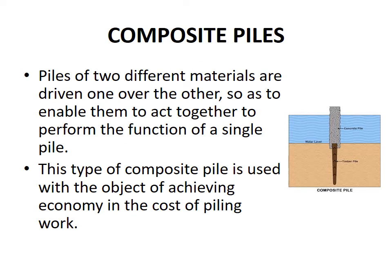Composite piles — piles of two different materials are driven one over the other so as to enable them to act together to perform the function of a single pile. As you can see from the figure, this composite pile has a concrete portion at the top and a timber portion at the bottom. This type is used to achieve economy in the cost of piling work.